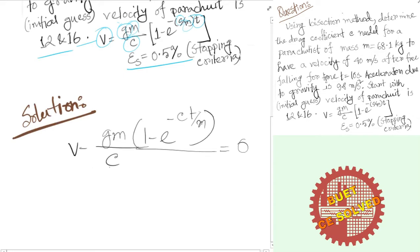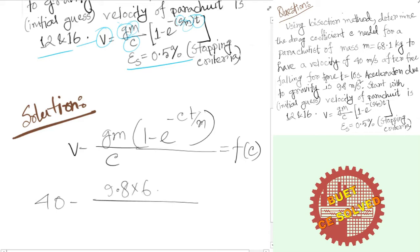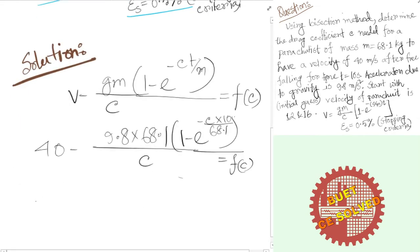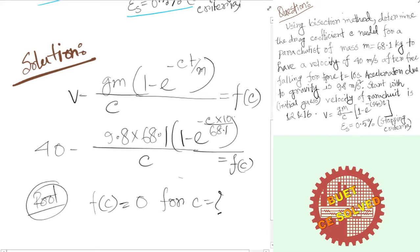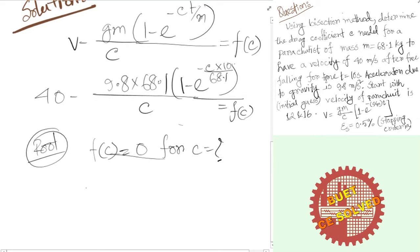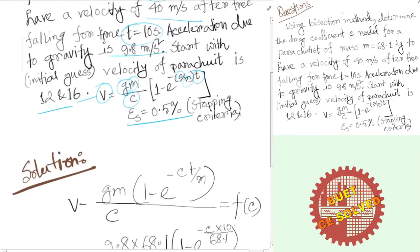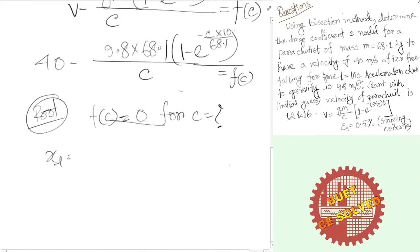We write f(c) equals zero, and the xR value is equal to the root of the equation. So the function of c equals zero when the root is found. The lower limit xl equals 12 and the upper limit xu equals 16.